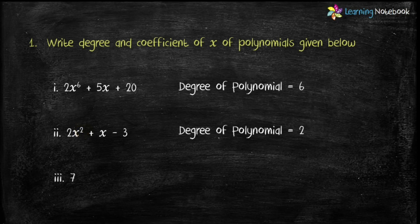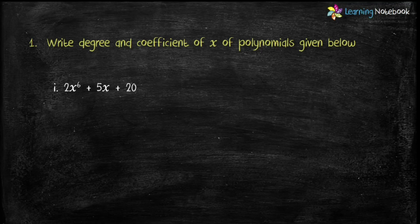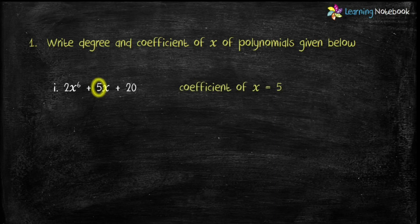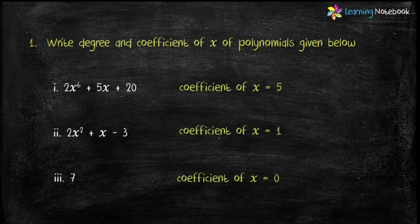Third part is 7, which can be written as 7x raised to the power 0. Therefore the degree of this polynomial is 0. Now let's find the coefficient of x for all these polynomials. In the first part, the number multiplied by variable x is 5, therefore coefficient of x equals 5. In the second part, the number multiplied by x is 1, therefore coefficient of x is 1. In the third part, 7 is a constant with no x term, therefore coefficient of x is 0.